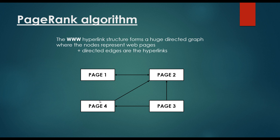Page 1 is pointing to Page 2, and Page 4 is pointing to Page 2. Page 3 is also pointing to Page 2. So we get the PageRank of Page 1 divided by its number of outgoing links, which equals 1, plus the PageRank of Page 4 divided by its outgoing links, which is also 1. Then we consider Page 3: it points to both Page 2 and Page 4, so its number of outgoing links is 2. The PageRank of Page 2 equals PR(Page 1)/1 + PR(Page 4)/1 + PR(Page 3)/2.